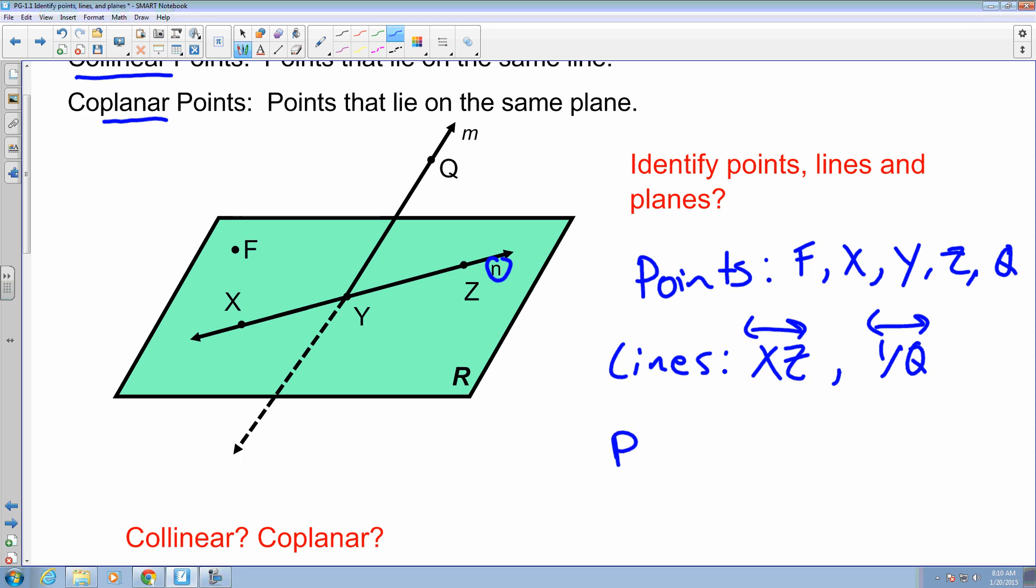Okay, for Plane, it looks like there's plane R. You can call it just Plane R because of the name there, or you can identify it by three points. So I can say all you have to do is identify three points that are on the plane. So I can say F, X, Z for instance. Are there other points on there? Yeah. But you know, these ones are and you can use that to identify.